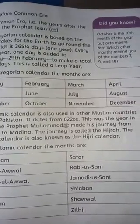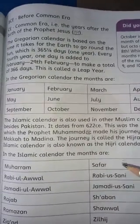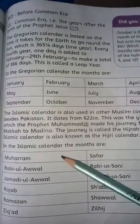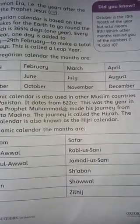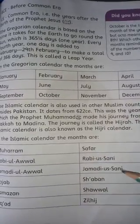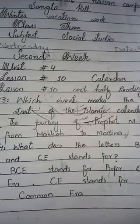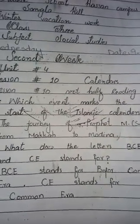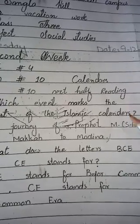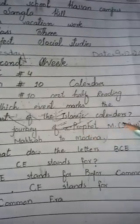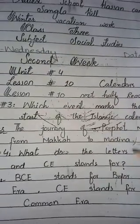The Islamic calendar is also known as the Hijrah calendar. Which event marks the start of the Islamic calendar? The answer is: the journey of Prophet Muhammad ﷺ from Makkah to Medina.